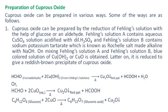Cuprous oxide can be prepared in various ways. Some of the ways are as follows. Cuprous oxide can be prepared by the reduction of Fehling's solution with the help of glucose or an aldehyde.